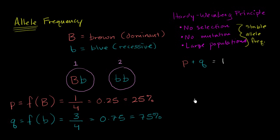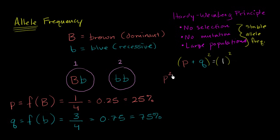Now we can do a little interesting mathematics that lets us think about homozygotes and heterozygotes. To do that, let's square both sides. Squaring the left-hand side is just squaring a binomial — you may want to review it; there are algebra videos on Khan Academy that cover this. This gives us P squared plus two times PQ plus Q squared, and of course one squared is still equal to one. Now, what are each of these terms?